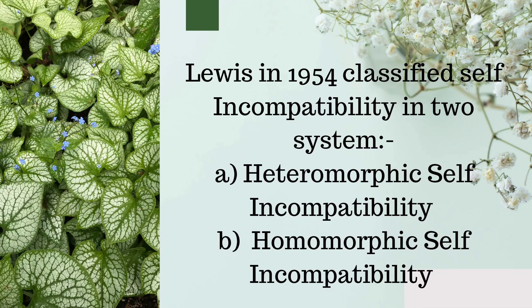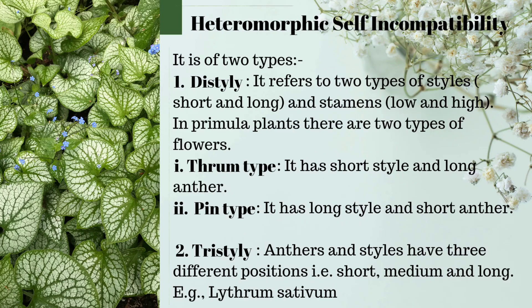Leavitt in 1954 classified self-incompatibility into two systems: heteromorphic self-incompatibility and homomorphic self-incompatibility. Heteromorphic self-incompatibility is of two types: distyle and tristyle. Distyle refers to two types of style — short and long — as seen in Primula plants.